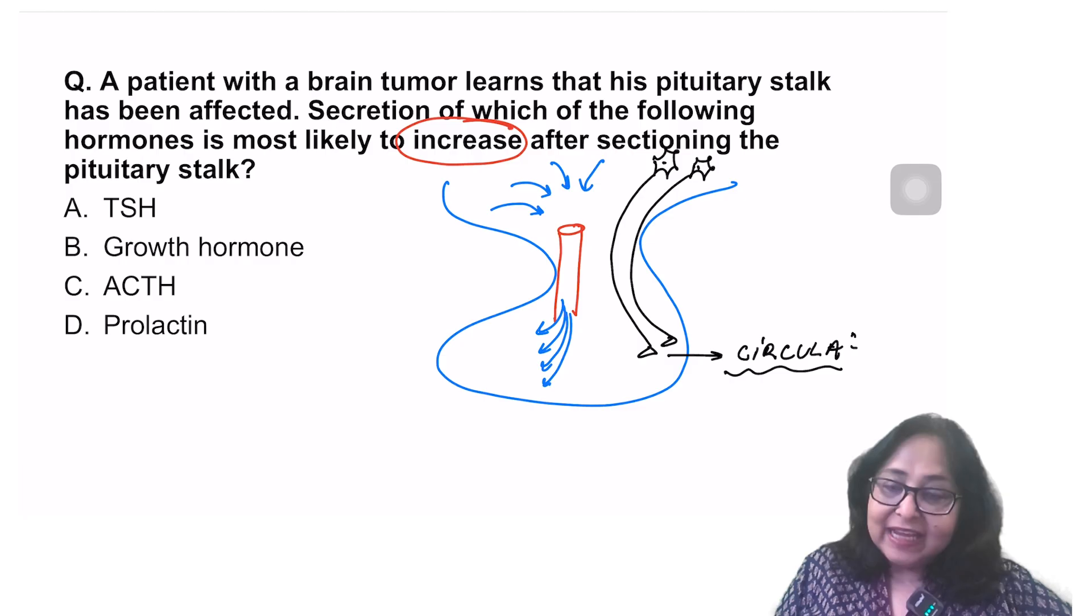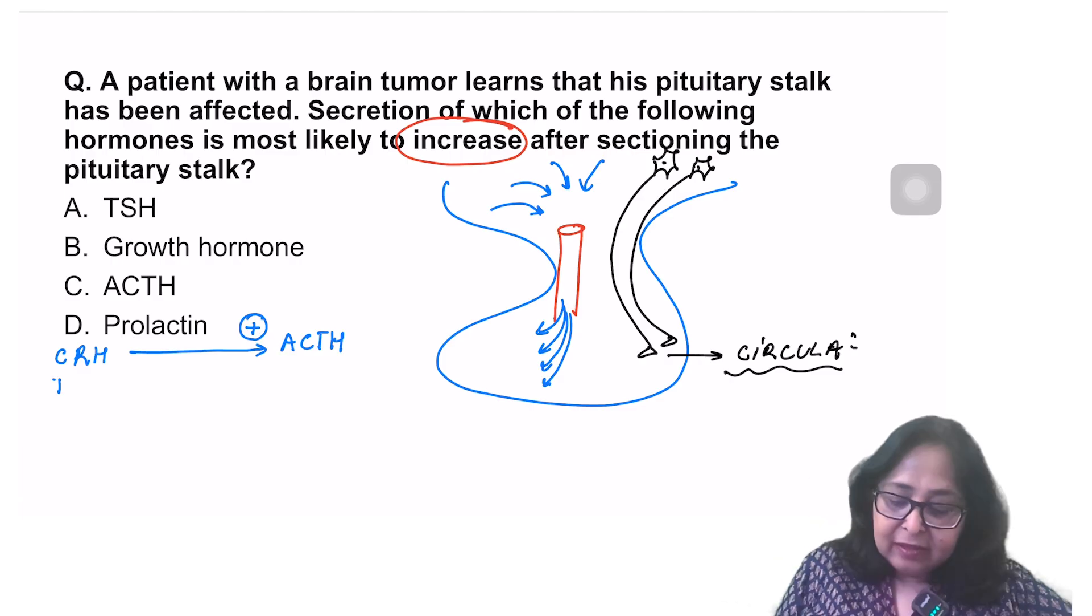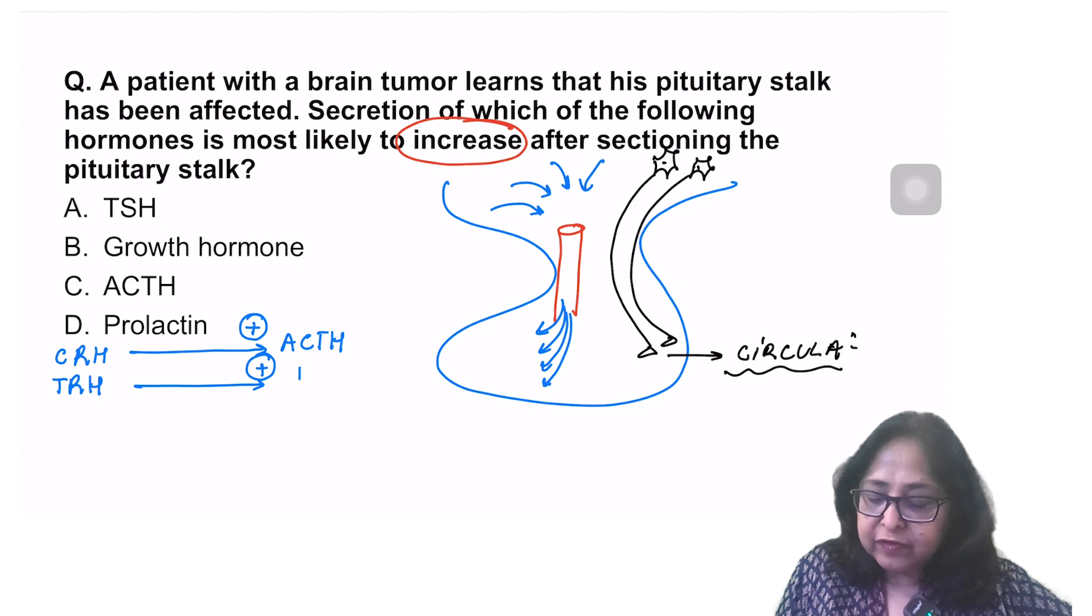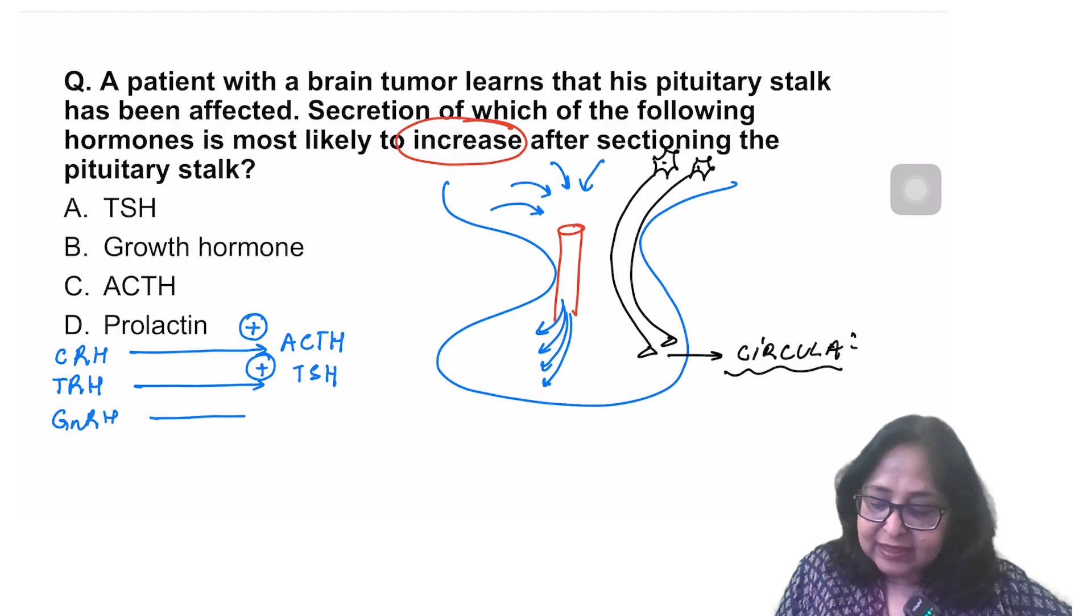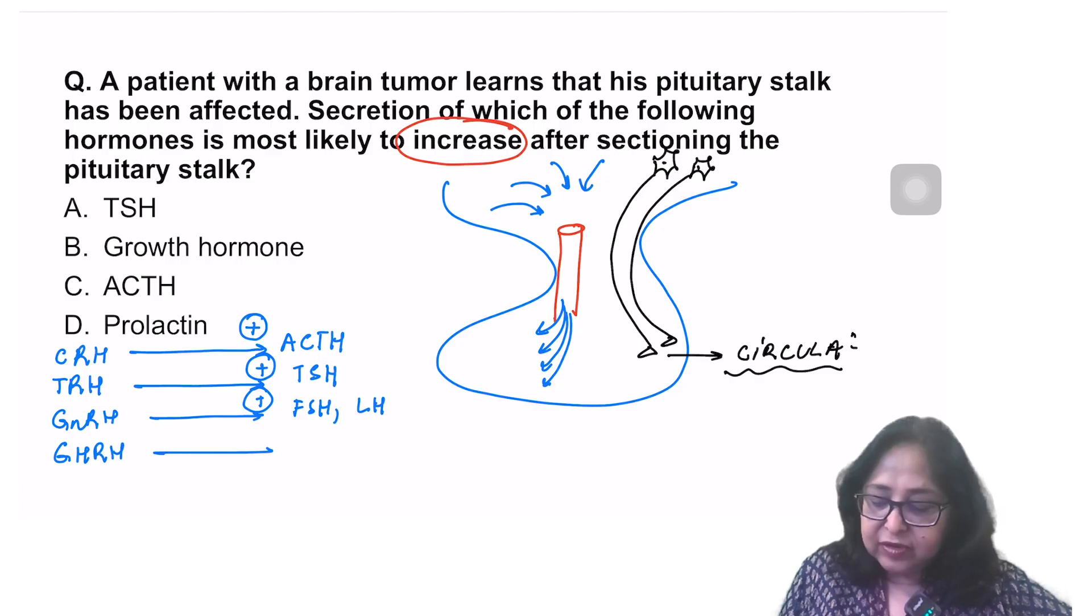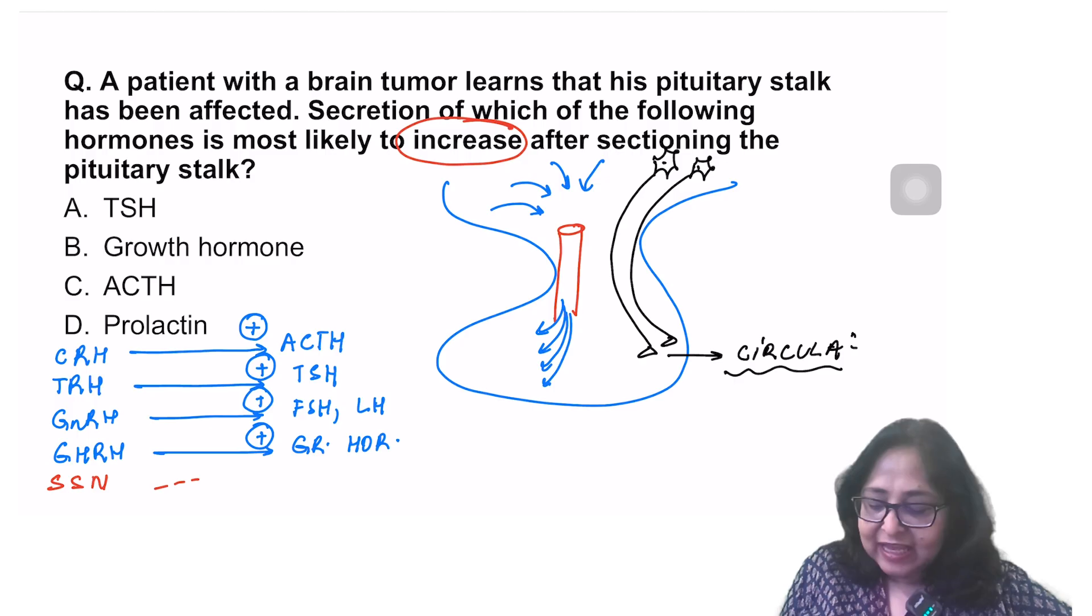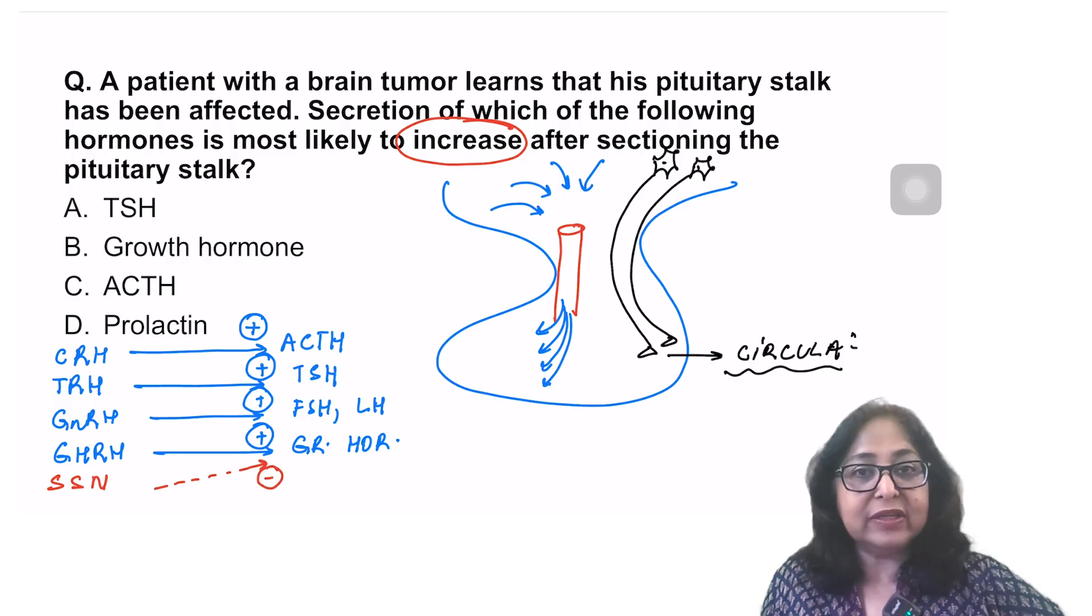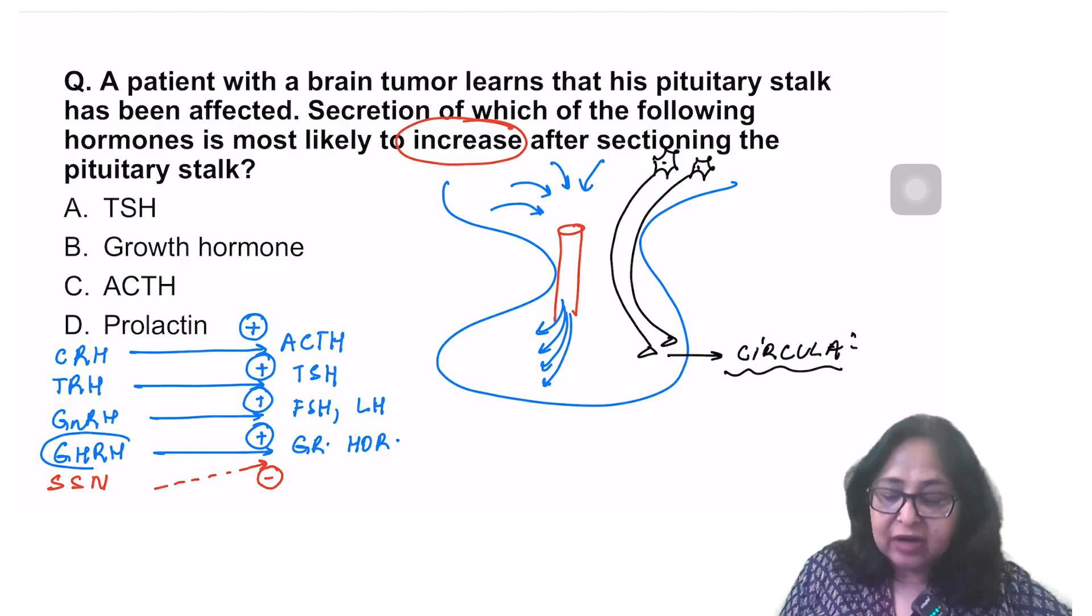The first one is CRH, corticotropin releasing hormone, which increases the secretion of adrenocorticotrophic hormone from the anterior pituitary. Thyrotropin releasing hormone increases the secretion of thyroid stimulating hormone. GnRH increases the secretion of FSH and LH. Growth hormone releasing hormone increases the secretion of growth hormone. An inhibiting hormone, somatostatin, can also affect the growth hormone secretion, but somatostatin will reduce the growth hormone secretion. But please remember, out of the two, it is GHRH which is more important.